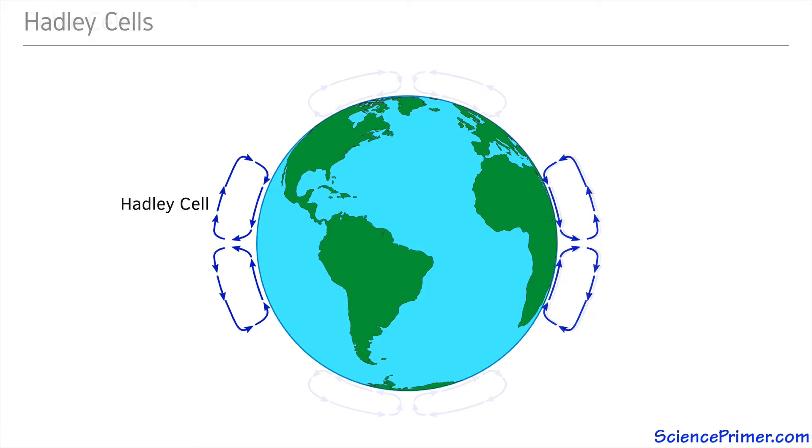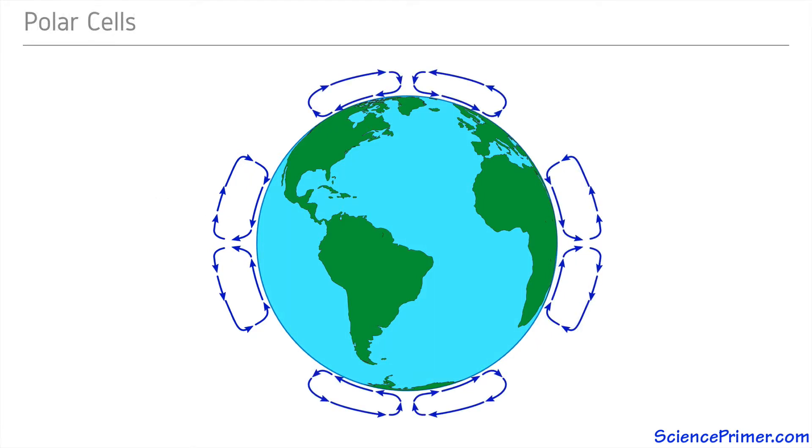There is also a cell formed by the sinking of cool, dense air at either pole. This cell runs to about 60 degrees north and south latitude before Coriolis deflection and surface warming cause air to rise, completing the cycle.